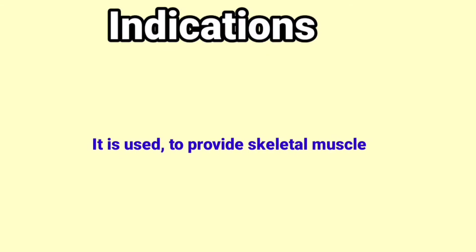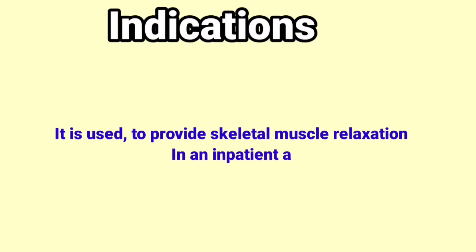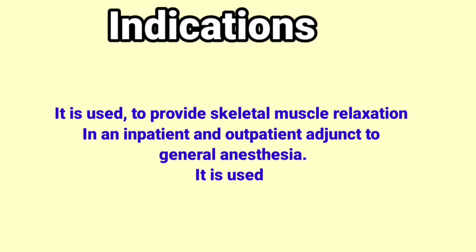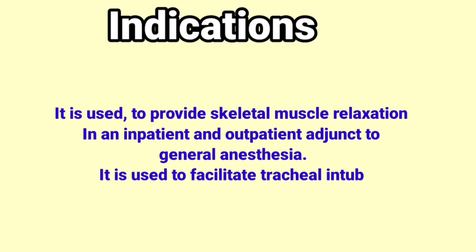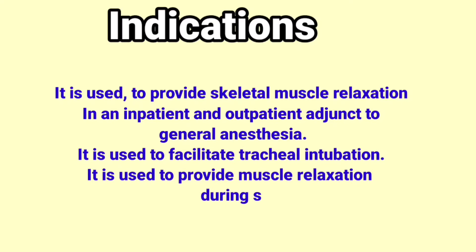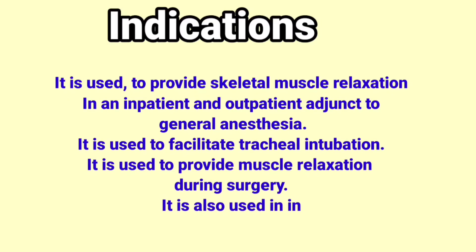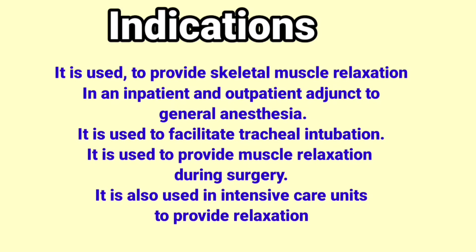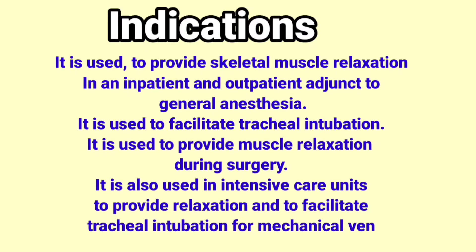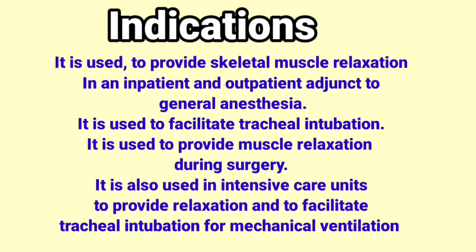Indications of Cisatracurium: It is used to provide skeletal muscle relaxation as an inpatient and outpatient adjunct to general anesthesia. It is used to facilitate tracheal intubation and to provide muscle relaxation during surgery. It is also used in intensive care units to provide relaxation and to facilitate tracheal intubation for mechanical ventilation.